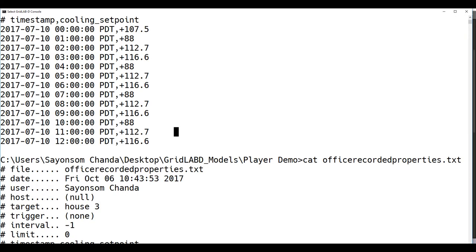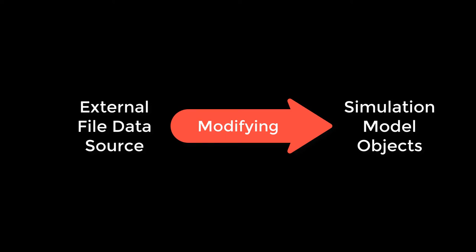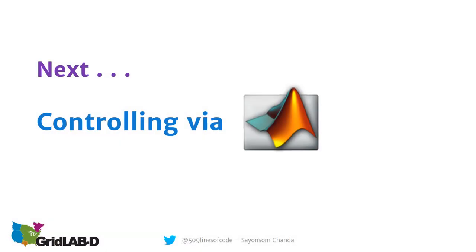In this lesson, what we learned is how to modify player files and how to modify objects inside GridLabD using player files. In the next lesson, we'll see how to control GridLabD by external programs like MATLAB or Python. I hope to see you in lesson number seven where we deal with this. See you next time, thank you for listening.